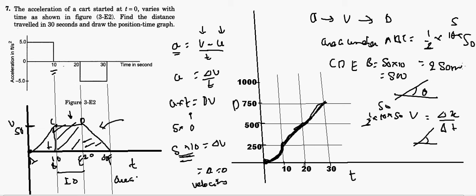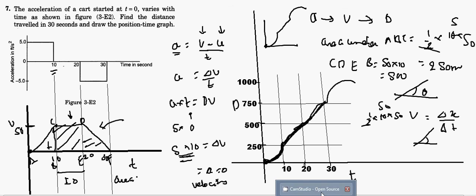So the final position-time graph looks like this: first a gradually increasing parabolic curve from 0 to 10 seconds, then a straight line from 10 to 20 seconds as velocity is constant, and finally a gradually flattening curve from 20 to 30 seconds as it decelerates. This is a very important concept — try to understand it. Thank you for watching.